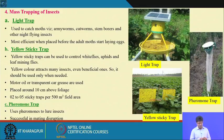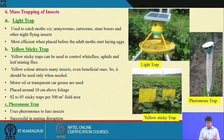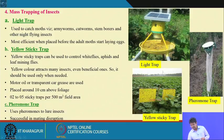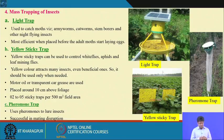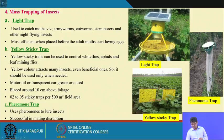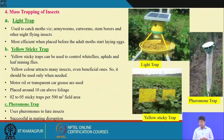Pheromone traps use sex pheromones — a powder kept inside the trap attracts male insects. When male insects become coated with the powder, other male insects are also attracted to them instead of following females, causing mating disruption and minimizing insect pest pressure. Light traps, yellow sticky traps, and pheromone traps are not very expensive and can be afforded by farmers.